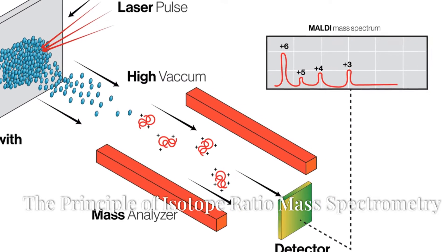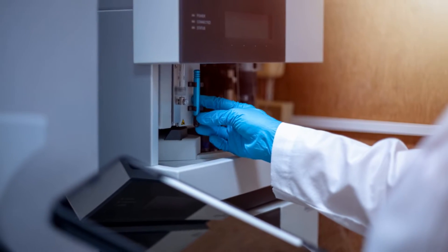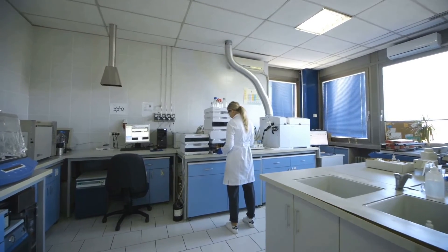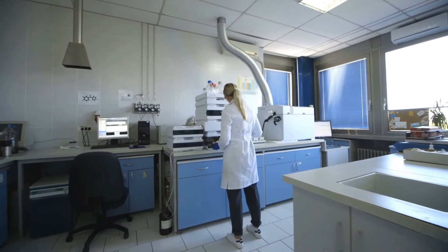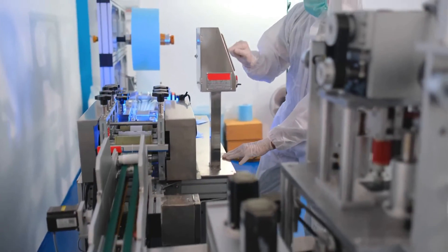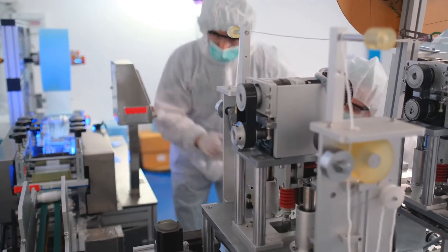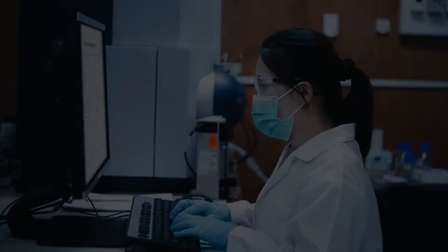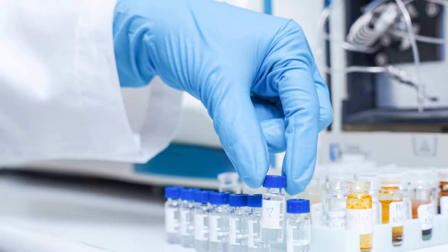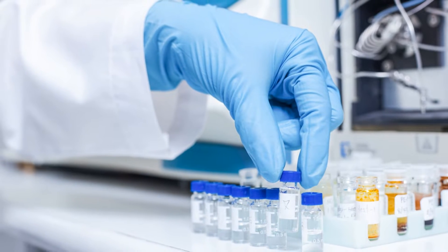Isotope Ratio Mass Spectrometry operates based on the principle of measuring the mass differences between isotopes. This technique is crucial in various scientific fields. Samples are first separated using advanced techniques like gas chromatography or elemental analyzers, ensuring precise isolation of the components. These separated samples are then introduced into the mass spectrometer, where the isotopes undergo ionization and are meticulously separated by their mass for accurate detection.